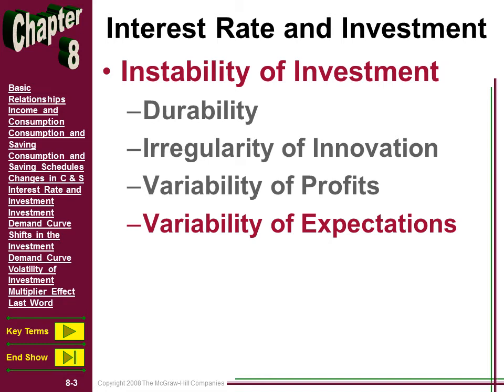The last two reasons are variability of profits and variability of expectations. Obviously, profits and expectations about profits ebb and flow with the business cycle. During economic expansion, profits are strong — therefore there's much more incentive for businesses to borrow and invest in new capital, going ahead and buying that next piece of equipment and putting it to use in a factory.